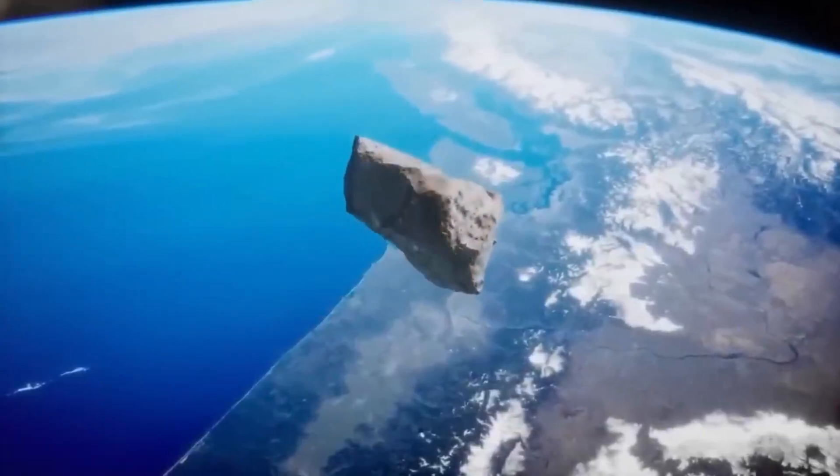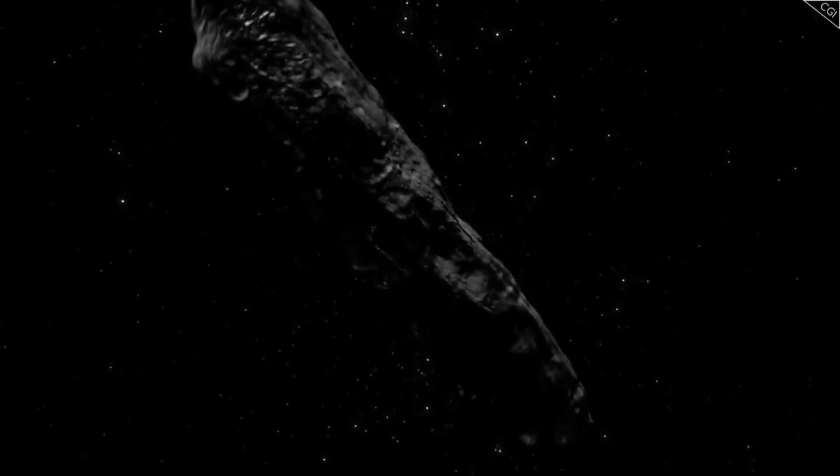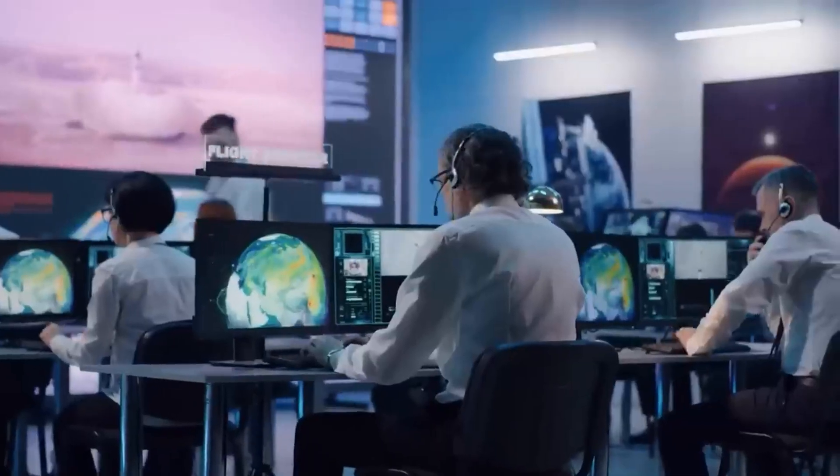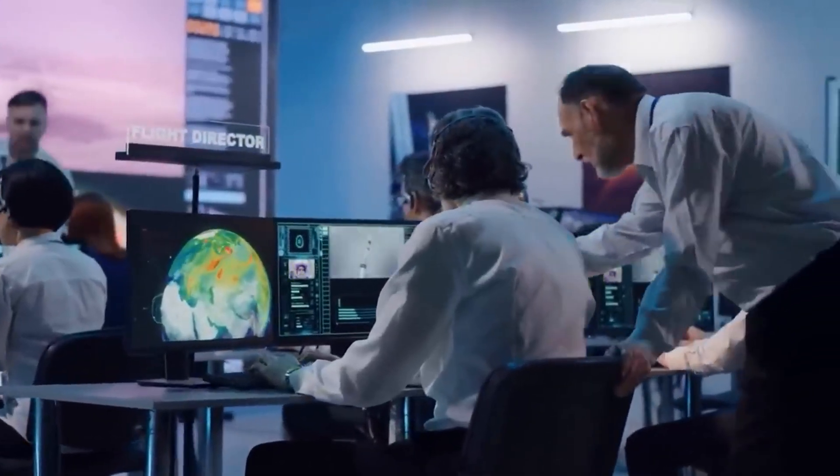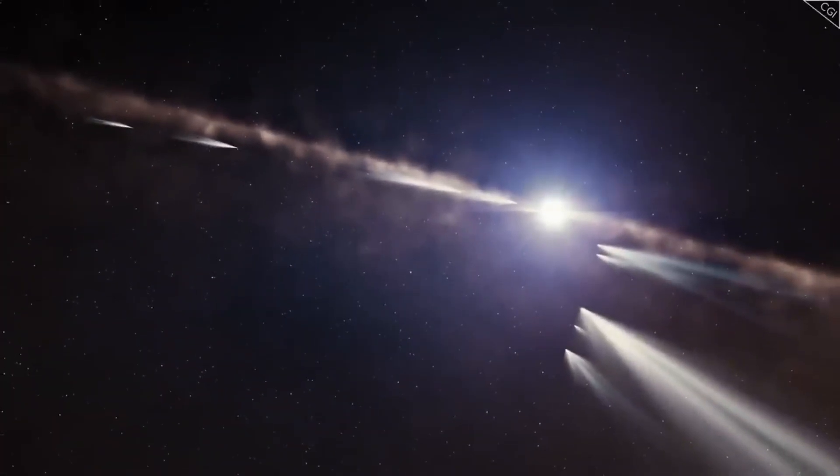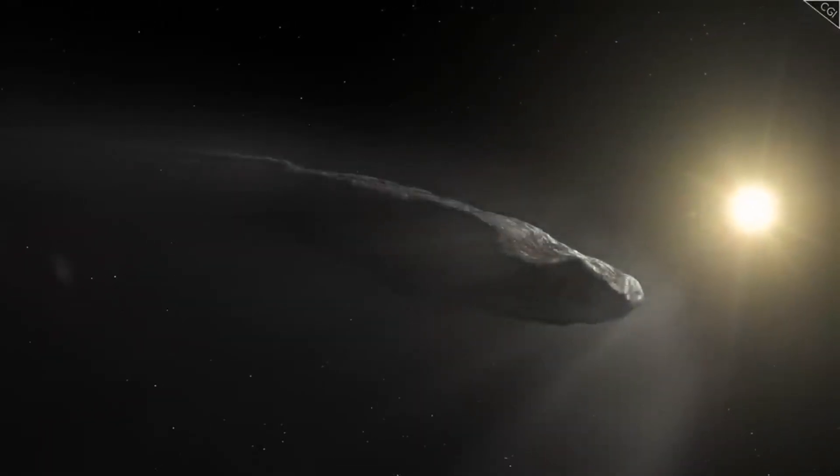The comet will reach its closest approach to the sun in late October 2025, when it will be just inside the orbit of Mars. This is when it will be at its most active, vaporizing material at the highest rate, and giving us the best opportunity to analyze its composition. After that, it will start its long journey back into the darkness between the stars.